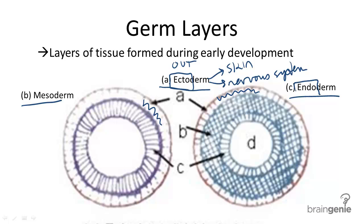The endoderm layer — endo meaning in — is the innermost layer, seen here under C. This layer becomes the digestive system. To remember this, first remember that endo means in, and try to think of a gut instinct. And when you think of gut, think digestion. Or just remember that endo has a D, which stands for digestive system.